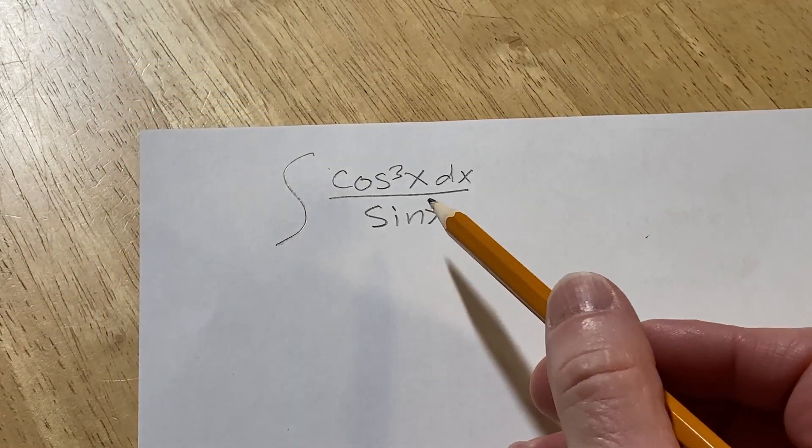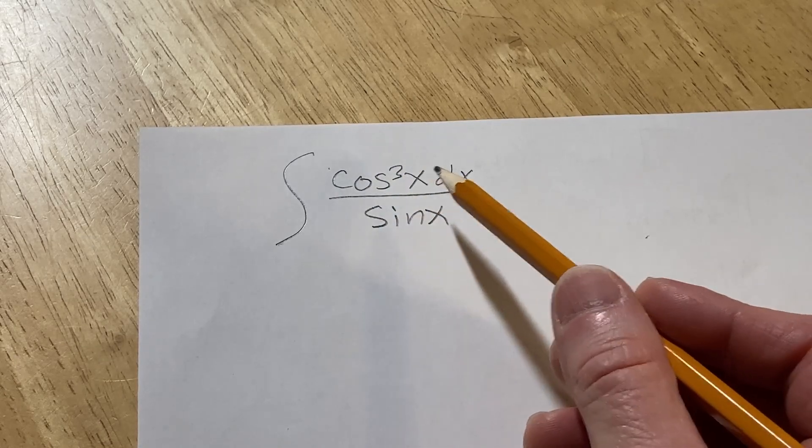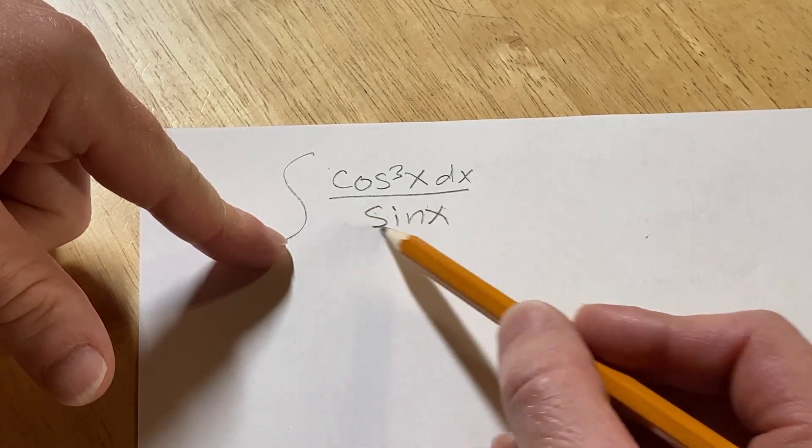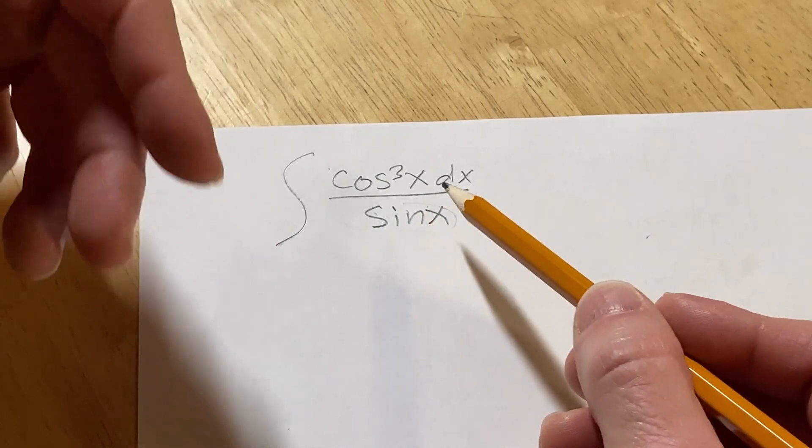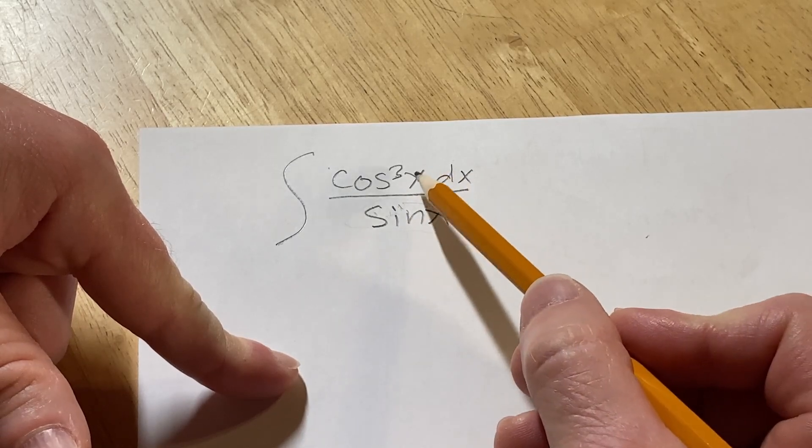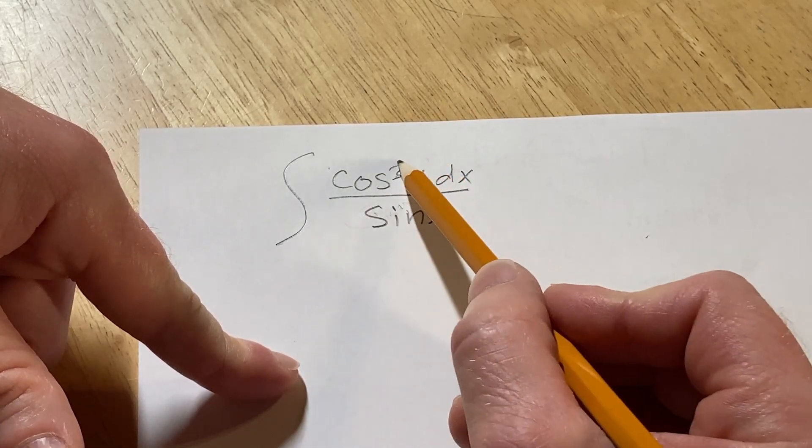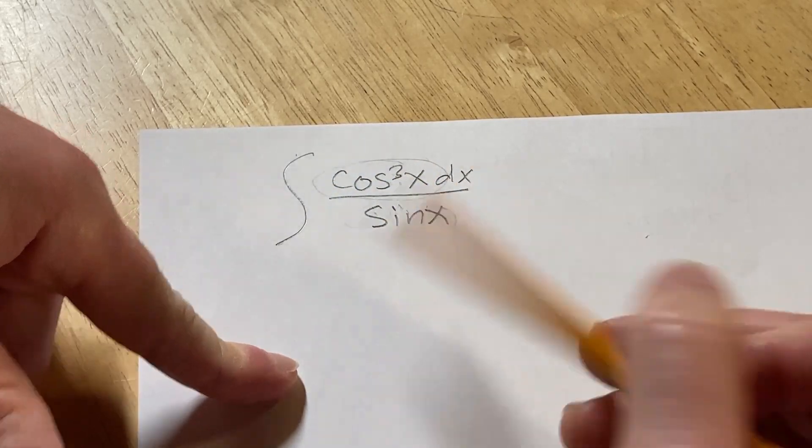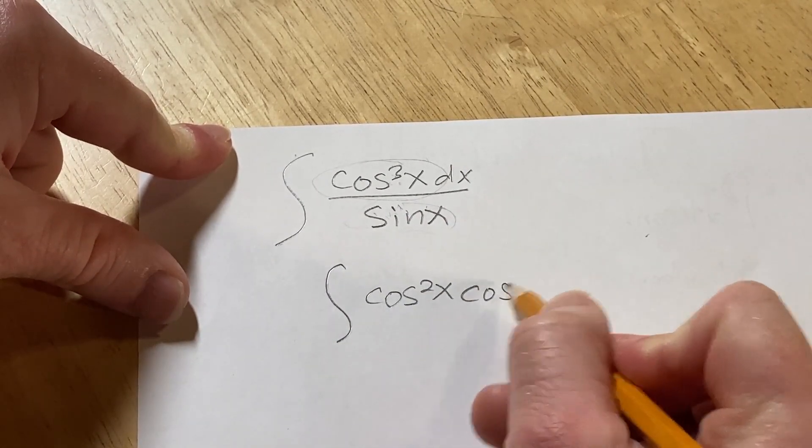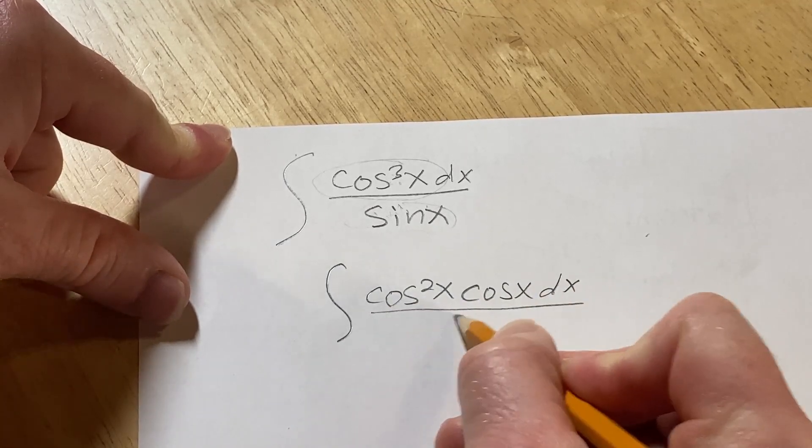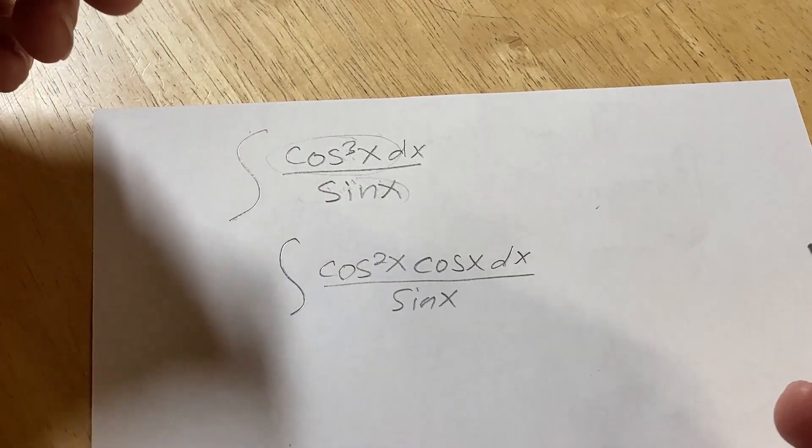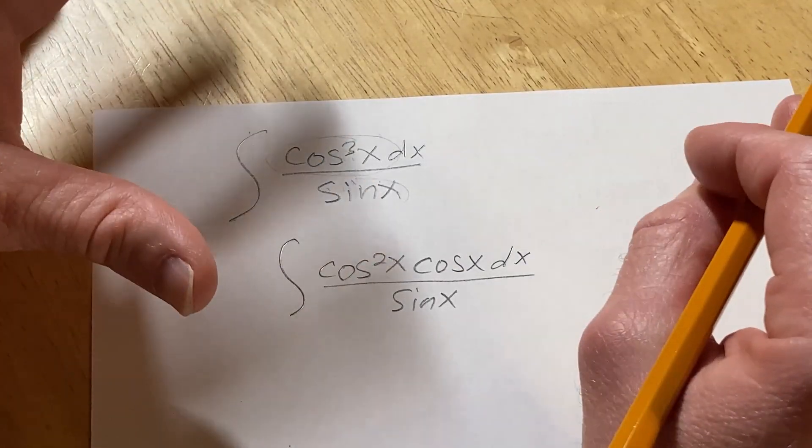So whenever you have trig functions like this in integrals, the first thing you should think of is u equals sine x. Right away you see it won't be, but it's a pretty good guess. The important thing is whenever you have powers of sine and cosine, if you have one of them being raised to an odd power in the numerator, what you can do is save a copy of that function. So write it like this: cosine squared x cosine x dx over sine x. You want to save a copy of the one that's being raised to an odd power. It's a really good strategy to implement.